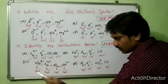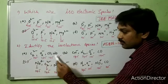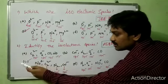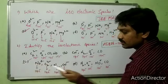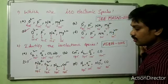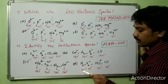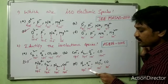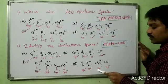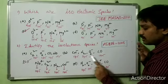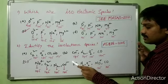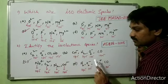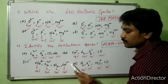All species in option C have the same number of electrons — 14 electrons — so option C is an isoelectronic species. Option D: N₂ has 14 electrons, O₂²⁻ has 17 electrons, NO⁺ has 14 electrons, and CO has 14 electrons. There is no complete similarity, so option D is not isoelectronic. Option C is the correct answer.